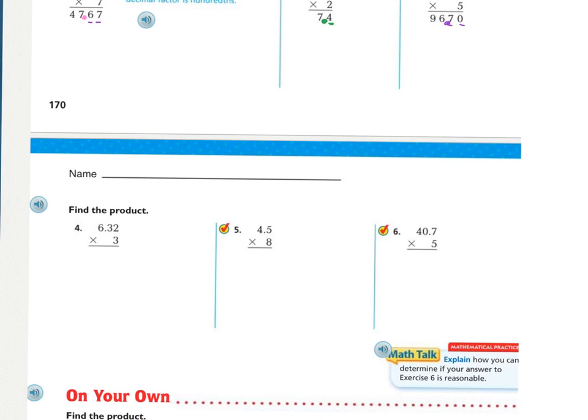And moving on to number four. So, I'm going to show the partial products method first. Three times two is six hundredths. And then three times three is nine tenths. And then three, and I'm just keeping my decimal lined up. Three times six is eighteen. And then I would bring all that down. So, no matter what method you did, you should end up with eighteen and ninety-six hundredths.